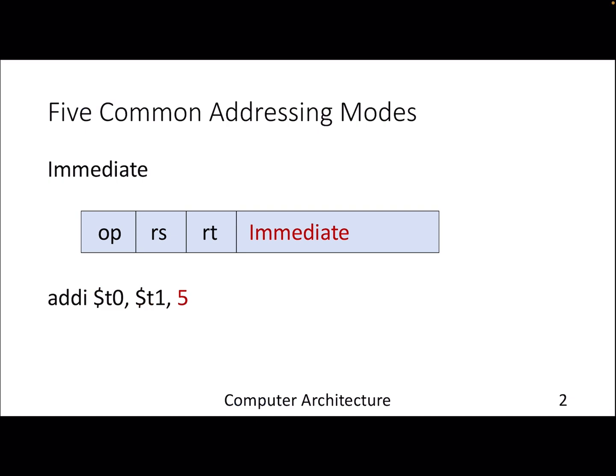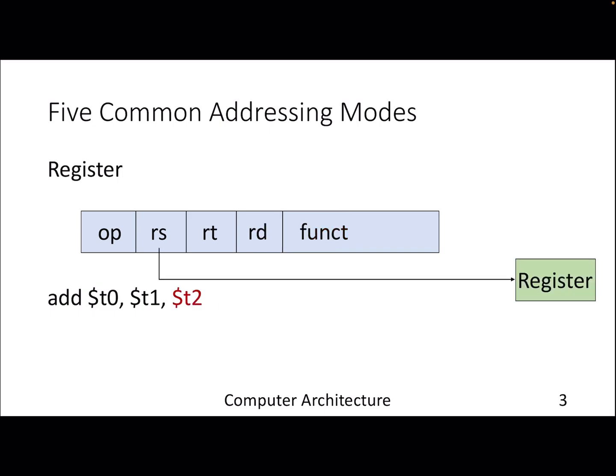This is the first addressing mode, called the immediate addressing mode. As you have already seen, immediate addressing mode deals with a constant, so the operand is already available in the instruction itself. This is pretty simple.